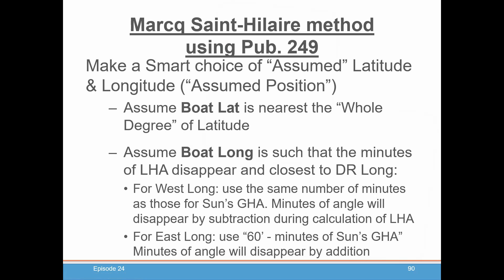It's actually fairly straightforward. For the assumed boat latitude, all you need to do is choose the whole degree of latitude that's closest to your DR position. If you're at exactly 30 minutes, you have your choice of going up or down. Some people will choose a latitude based on the direction they're traveling. In general, you typically choose the latitude nearest your whole degree of latitude.